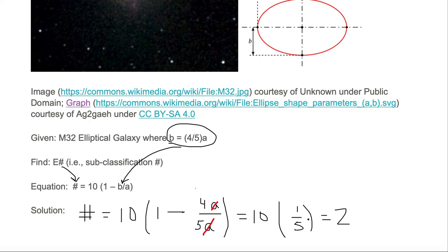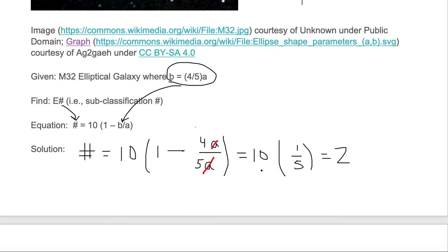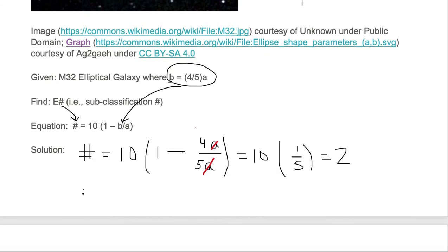Now that's our number. Our number is two. So the final answer is our value E is going to be two. The galaxy number is E2, and I'll put a box around it.